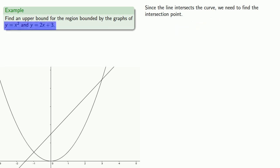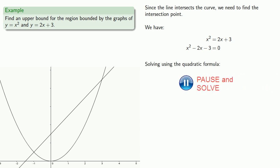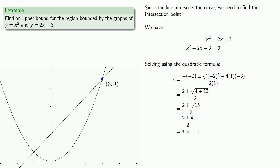Since y equals x squared and y equals 2x plus 3, we can find the intersection point by setting x squared equal to 2x plus 3. And this gives us an equation we can solve. Getting all of our terms to the left-hand side, we see this is a quadratic equation, and so we can solve this using the quadratic formula. And we get x equals 3 and x equals negative 1.